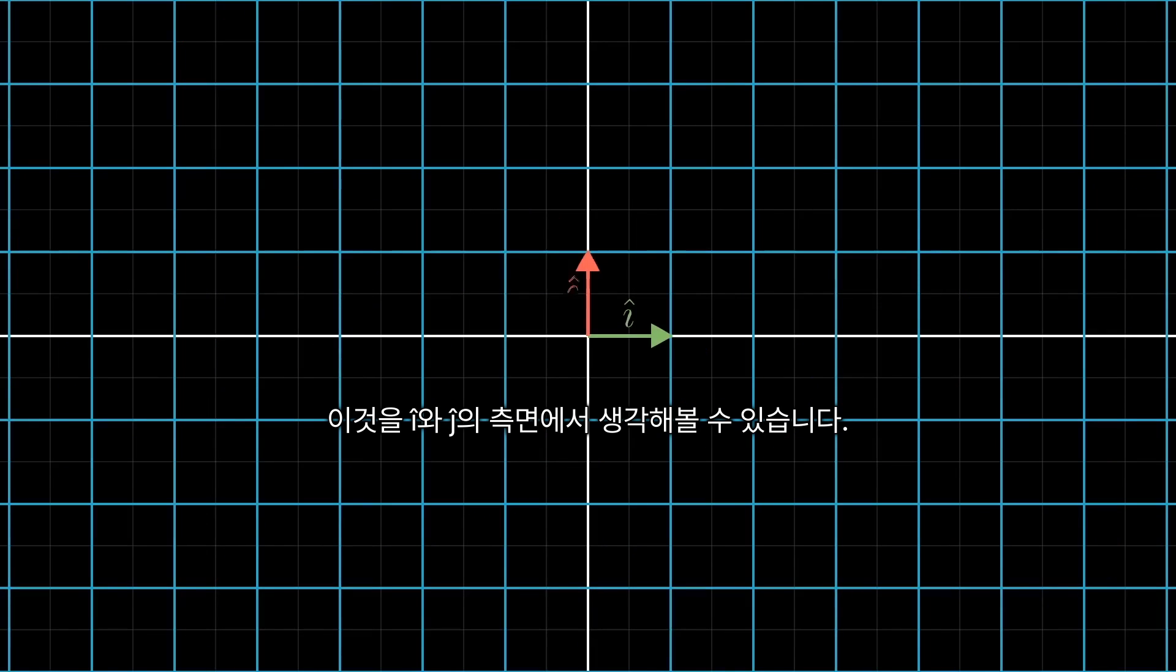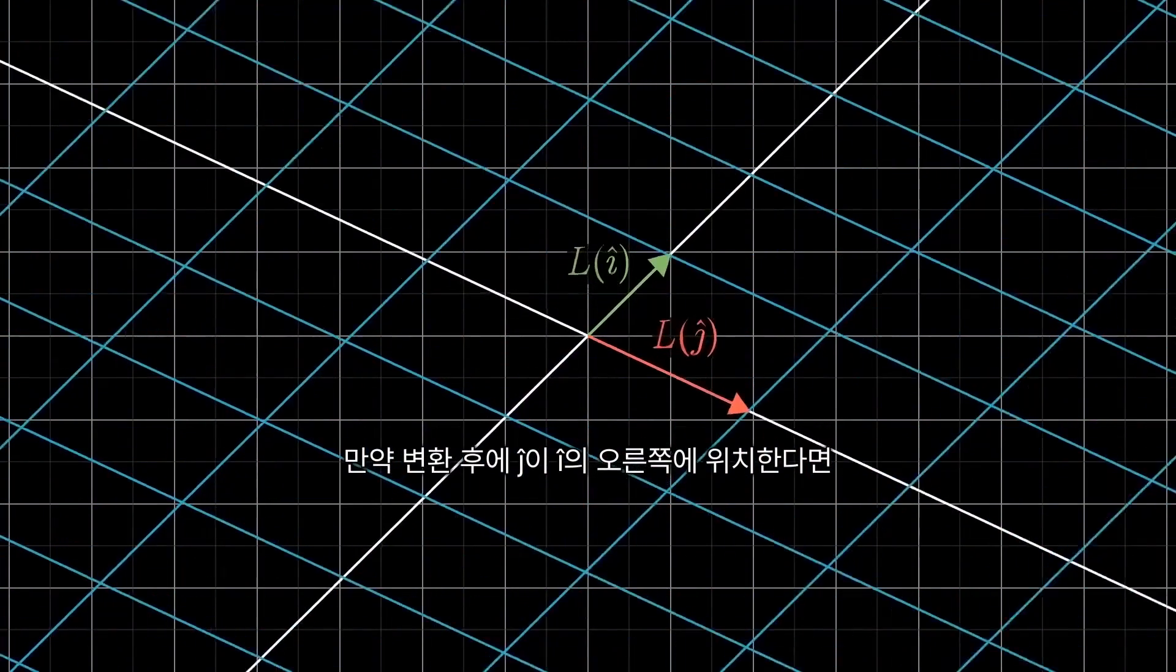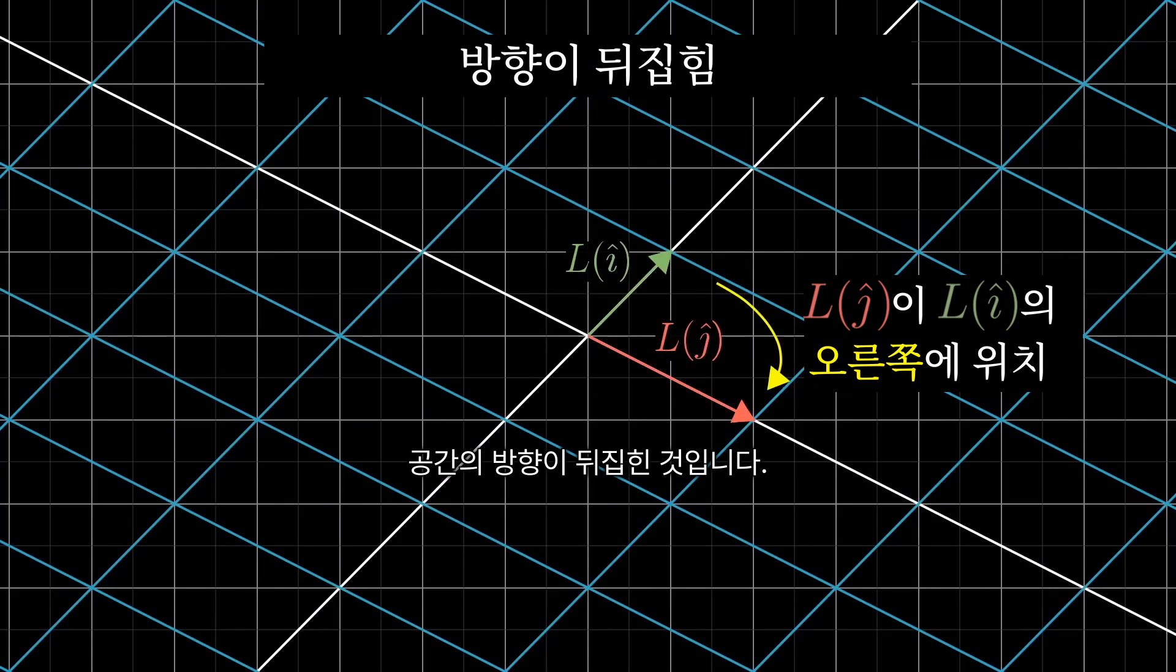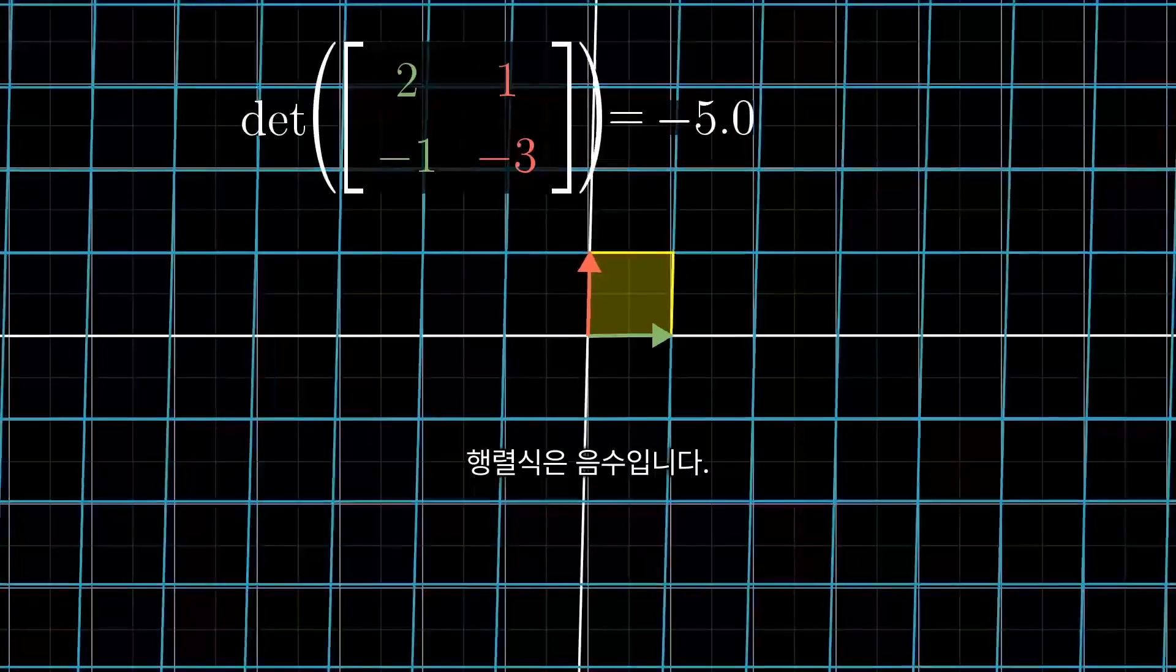Another way to think about it is in terms of i-hat and j-hat. Notice that in their starting positions, j-hat is to the left of i-hat. If, after a transformation, j-hat is now on the right of i-hat, the orientation of space has been inverted. Whenever this happens, whenever the orientation of space is inverted, the determinant will be negative.